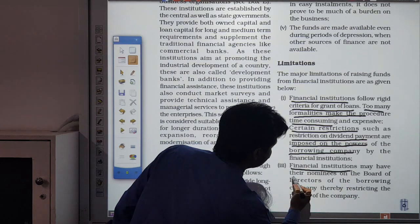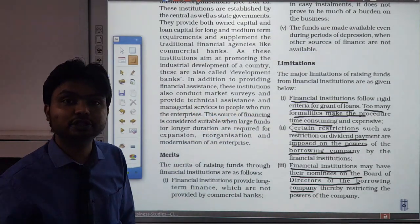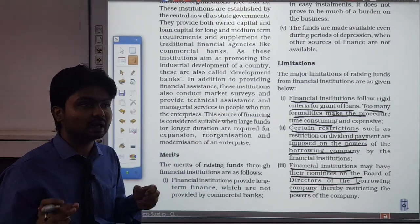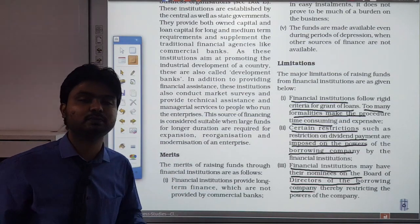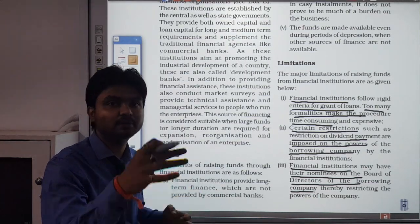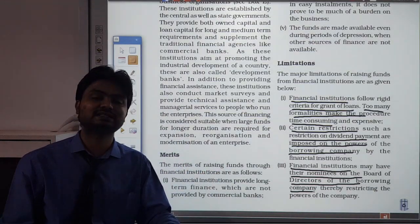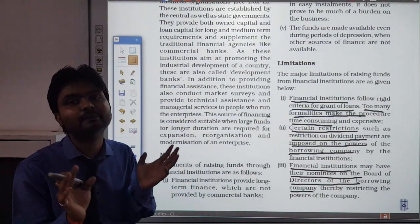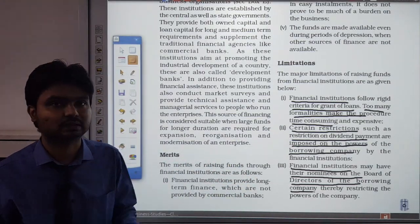Financial institutions have their nominees on the board of directors of the borrowing company. That means the financial institution appoints an individual in the company that has taken the loan. If you take a loan from any financial institution, a person will come and sit on your board of directors to monitor your decisions. This brings an unnecessary burden and oversight on the company — every decision must be consulted with this person, which sacrifices confidentiality, and that person could misuse the company's information.